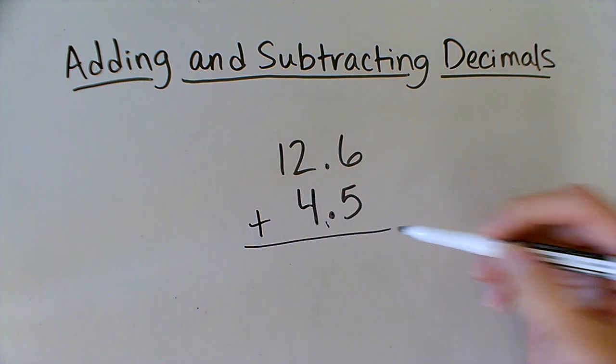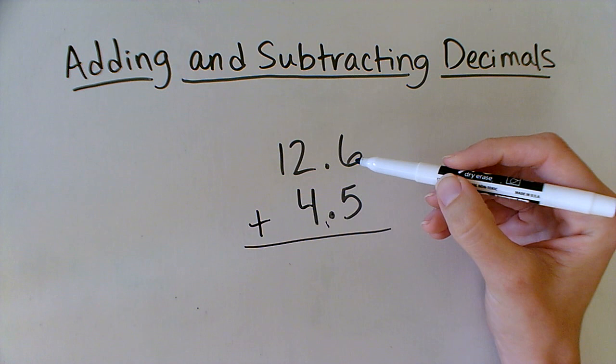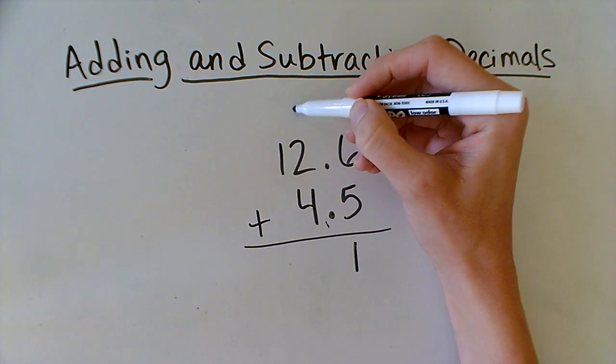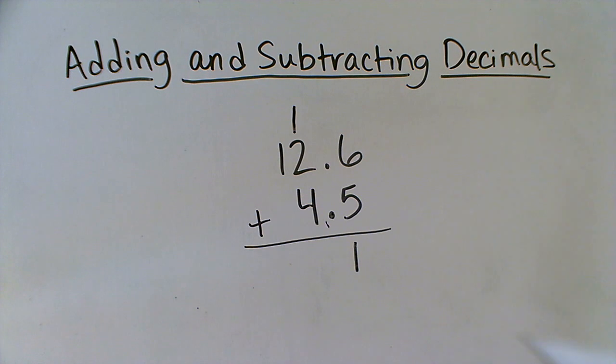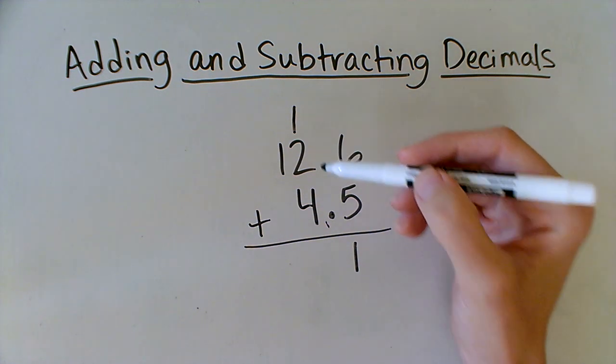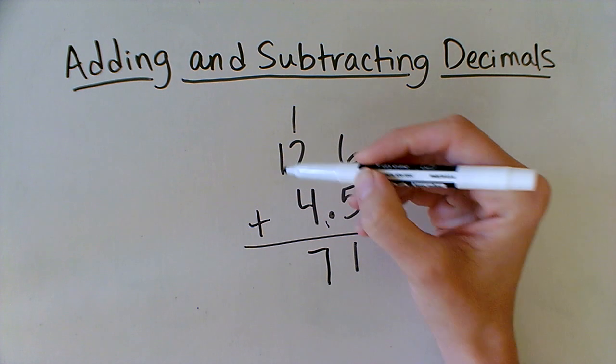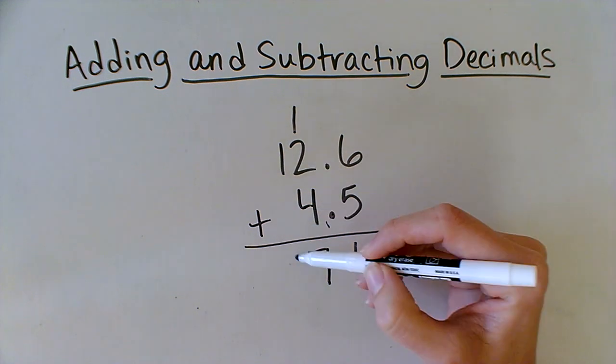Let's try adding. 5 and 6 make 11, and I'm going to regroup just the same as I would if there wasn't a decimal there. 1 plus 2 plus 4 is 7, and 1 plus nothing is 1.